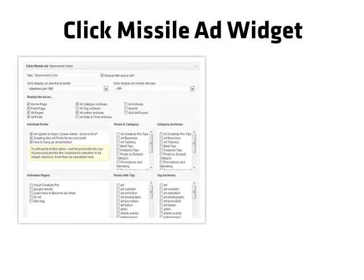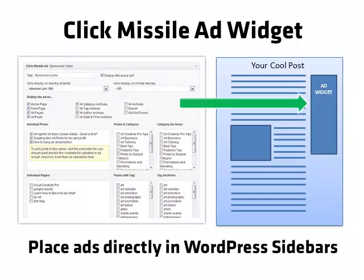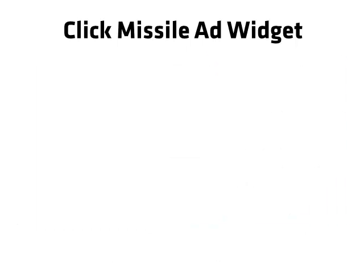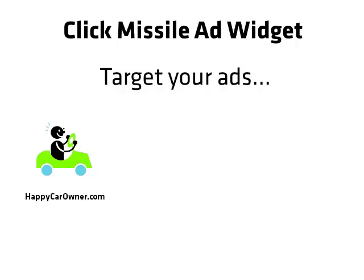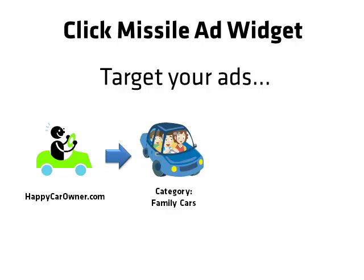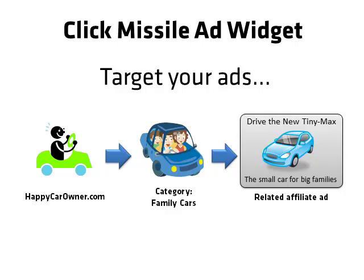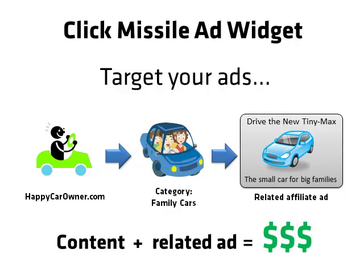Next up is the Click Missile ad widget, the super ad widget. This widget gives you the power to inject ads directly into your WordPress sidebars. You can set your ad widgets to show in lots of very useful targeted ways. For example, imagine you owned a blog called HappyCarOwner.com and within that blog you had some posts assigned to the category Family Cars. If you use Click Missile, you can show a specific affiliate ad widget in the sidebar for those posts that relate directly to Family Cars. This is a powerful feature because if your visitors are interested in your content and you can show them a related ad, it's likely to increase visitor clicks and as a result increase ad revenue, which after all is the name of the game.